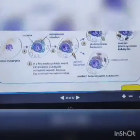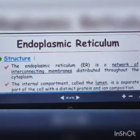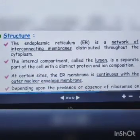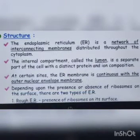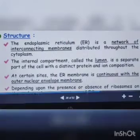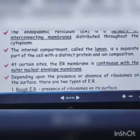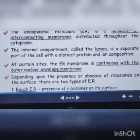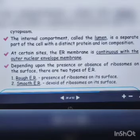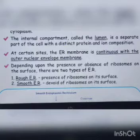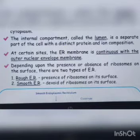Moving forward, we come to the endoplasmic reticulum. The ER is a network of interconnecting membranes distributed throughout the cytoplasm. The internal compartment is called the lumen, which separates cellular regions with distinct protein and ion compositions. Outside the nucleus under an electron microscope, we can see endoplasmic reticulum with ribosomes present on them — that's why they are known as rough endoplasmic reticulum.